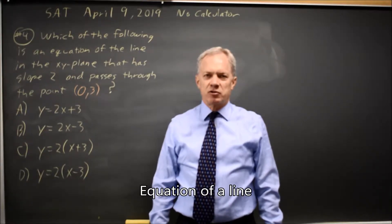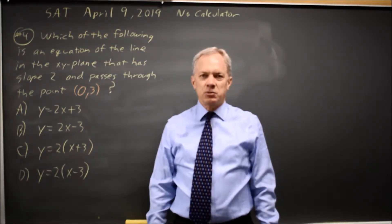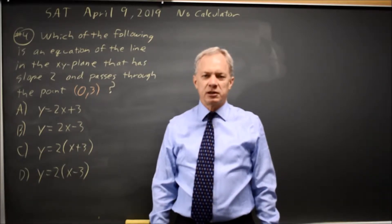This is non-calculator question number 4 from April 2019. College Board asked for the equation of a line with slope 2 passing through y-intercept 0,3.